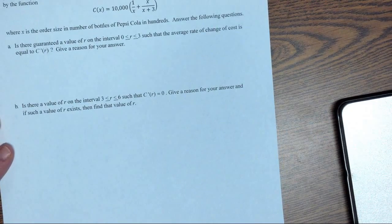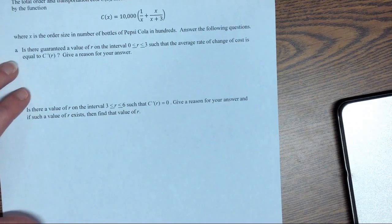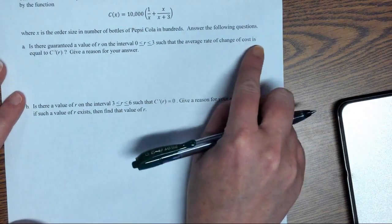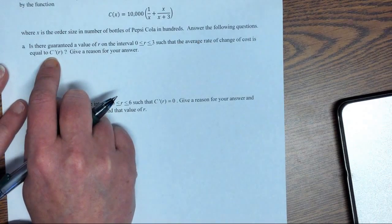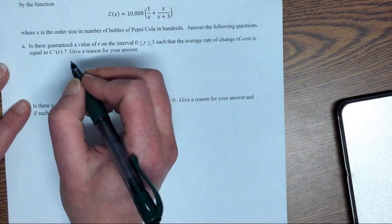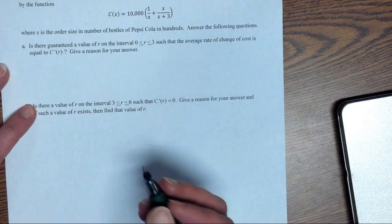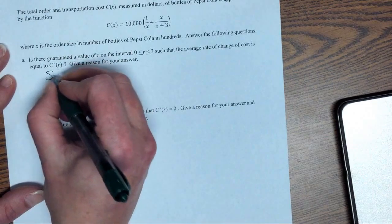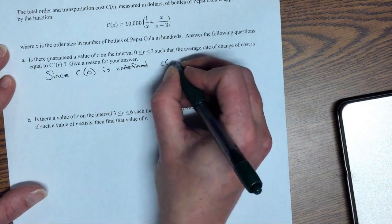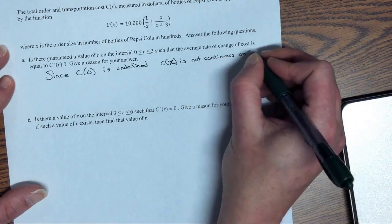The next one is giving us the cost function for bottles of Pepsi Cola. X is the order size and numbers of bottles in hundreds. Is there a guaranteed value of c on the interval from 0 to 3 such that the average rate of change is equal to the instantaneous rate of change? The average rate of change, that's the secant line. So first we have to make sure that we are continuous and differentiable from 0 to 3. 0, 1 divided by 0 is undefined.